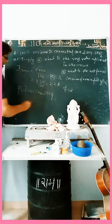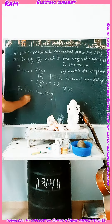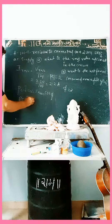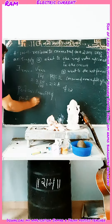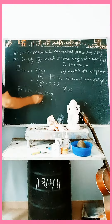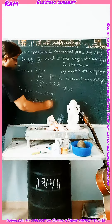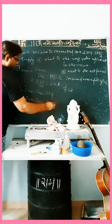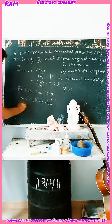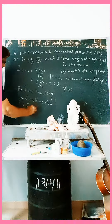Today in physics, AC current — C1 numerical. The numerical is like this: a 100 ohm resistor is connected to 220V and 50Hz AC supply.